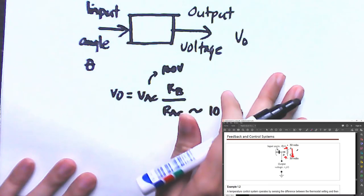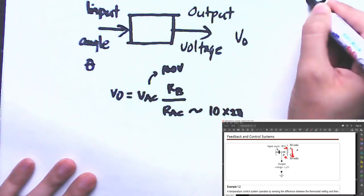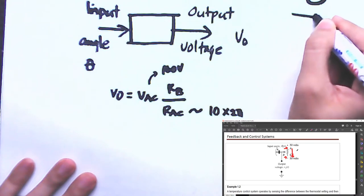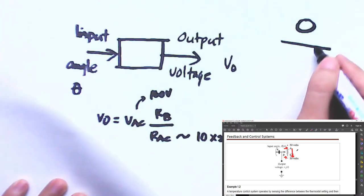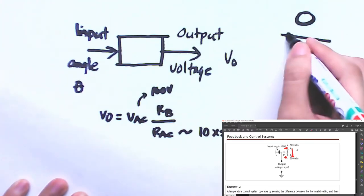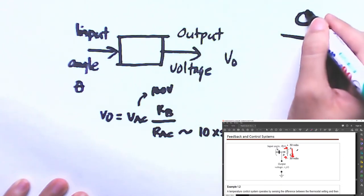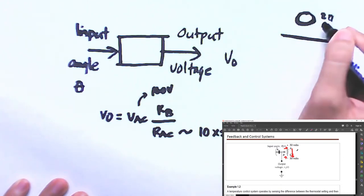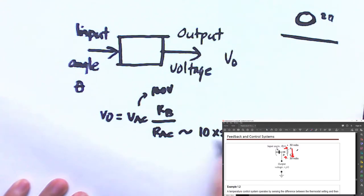Think of it like laying out the circular turns on a linear line: 10 turns of 2π each, for a total of 10 times 2π. The resistance R_B is proportional to the angle position — wherever the wiper has turned. We can basically express R_B as proportional to theta.